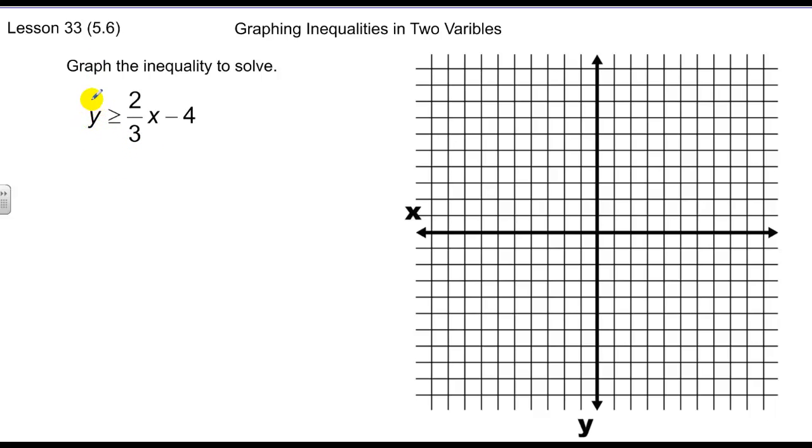If you'll notice here, we have an inequality of y is greater than or equal to two-thirds x minus four. The equality part of y equals two-thirds x minus four doesn't really change. We can graph that just like we have in the past with our slope intercept concept.